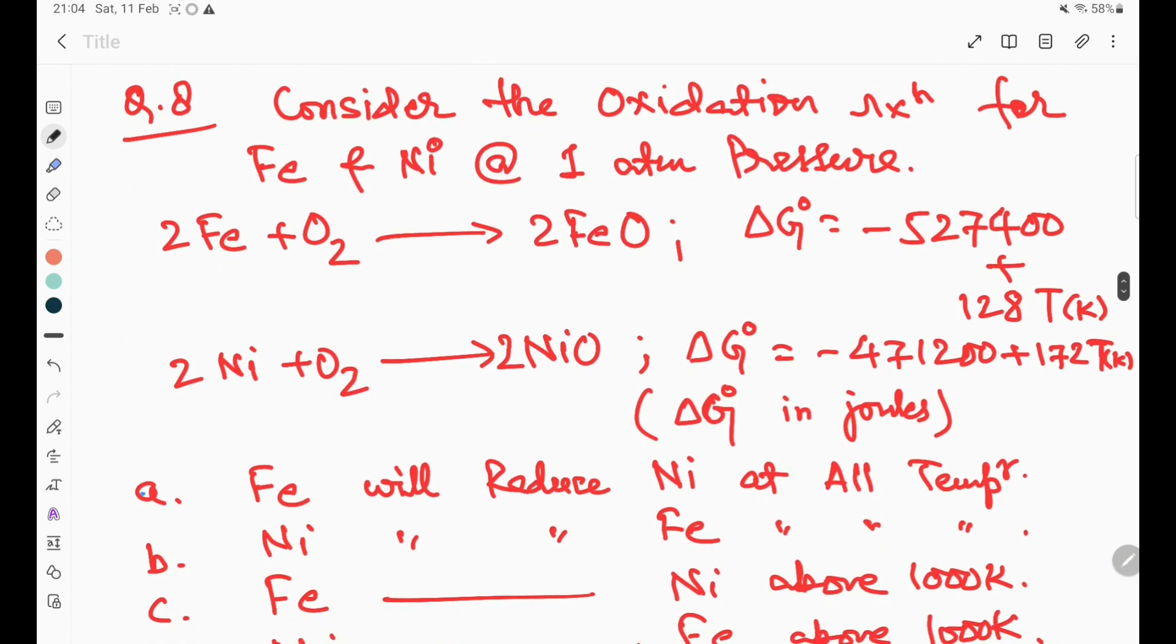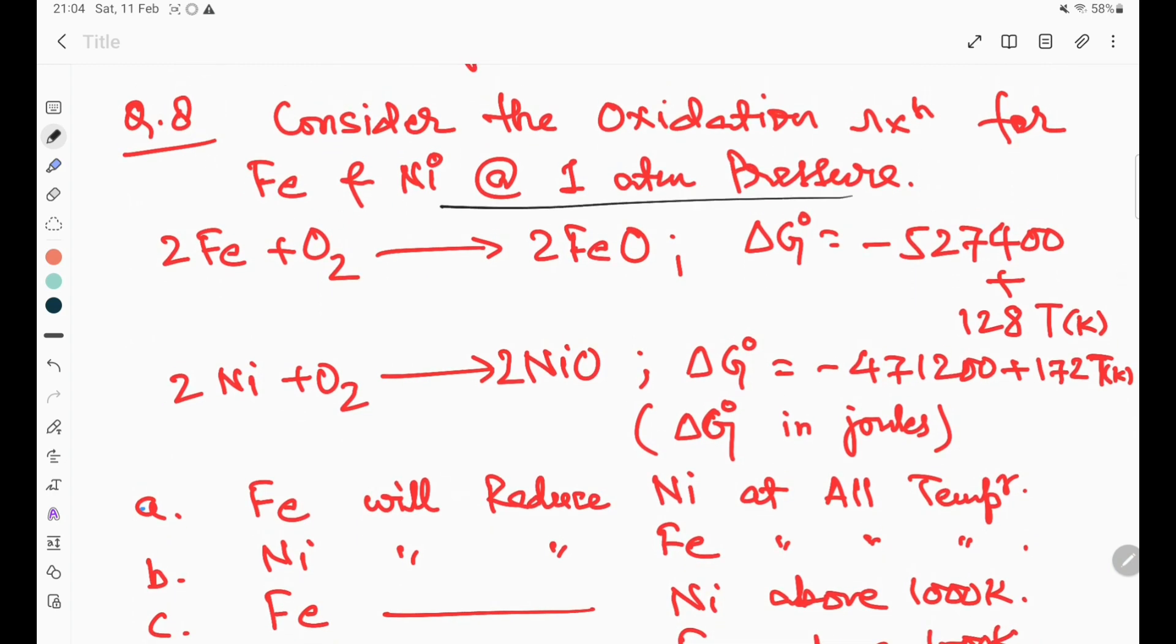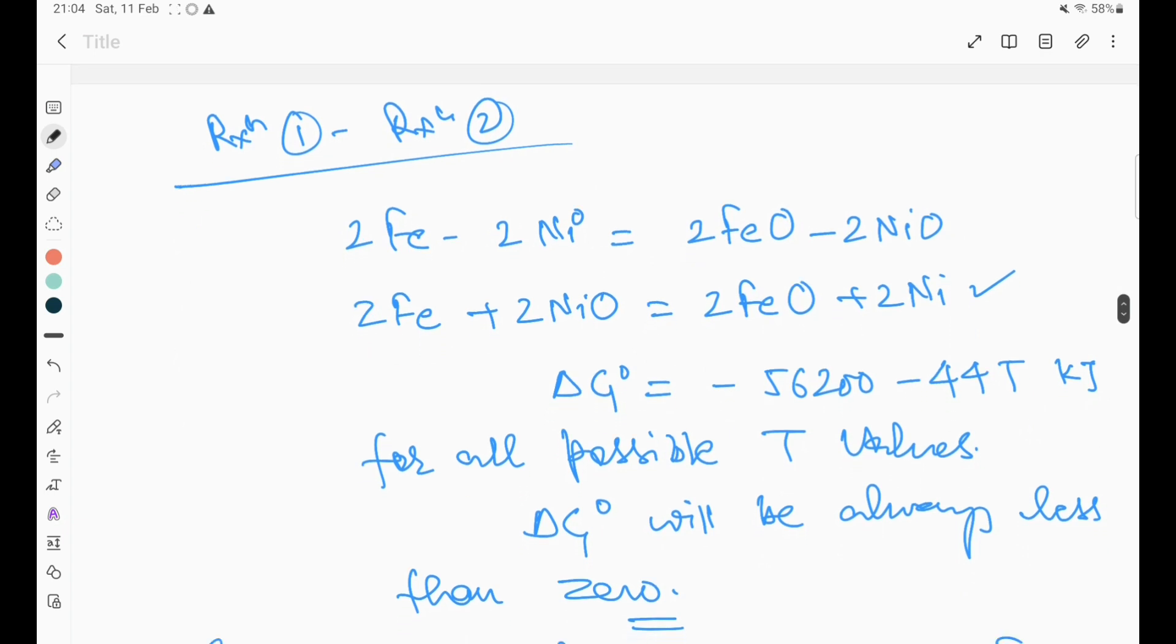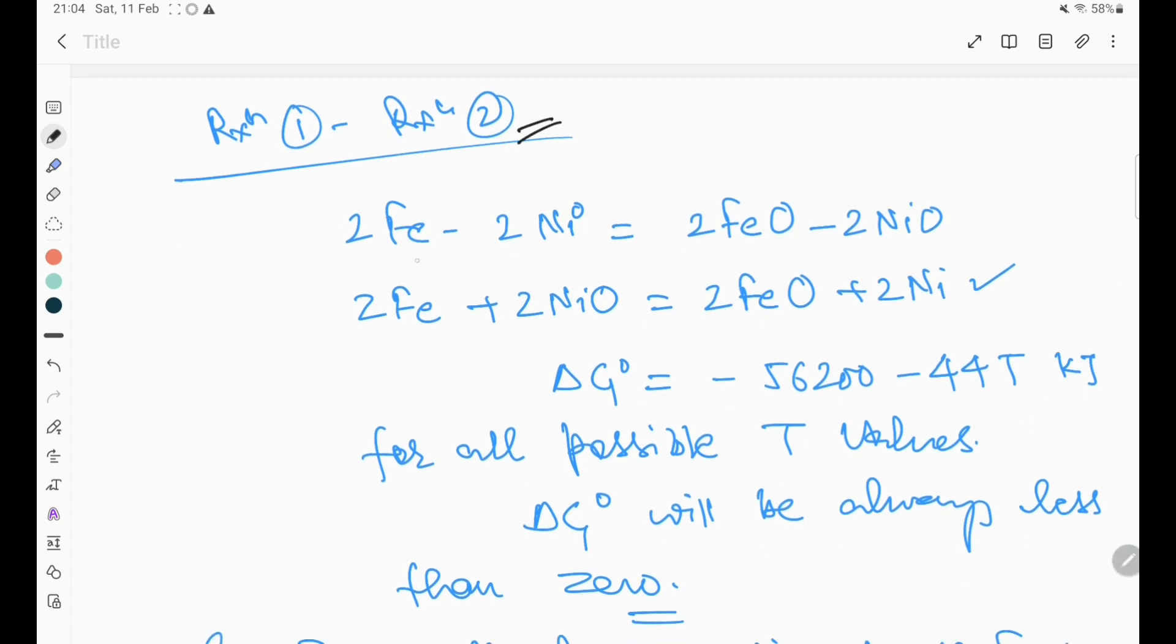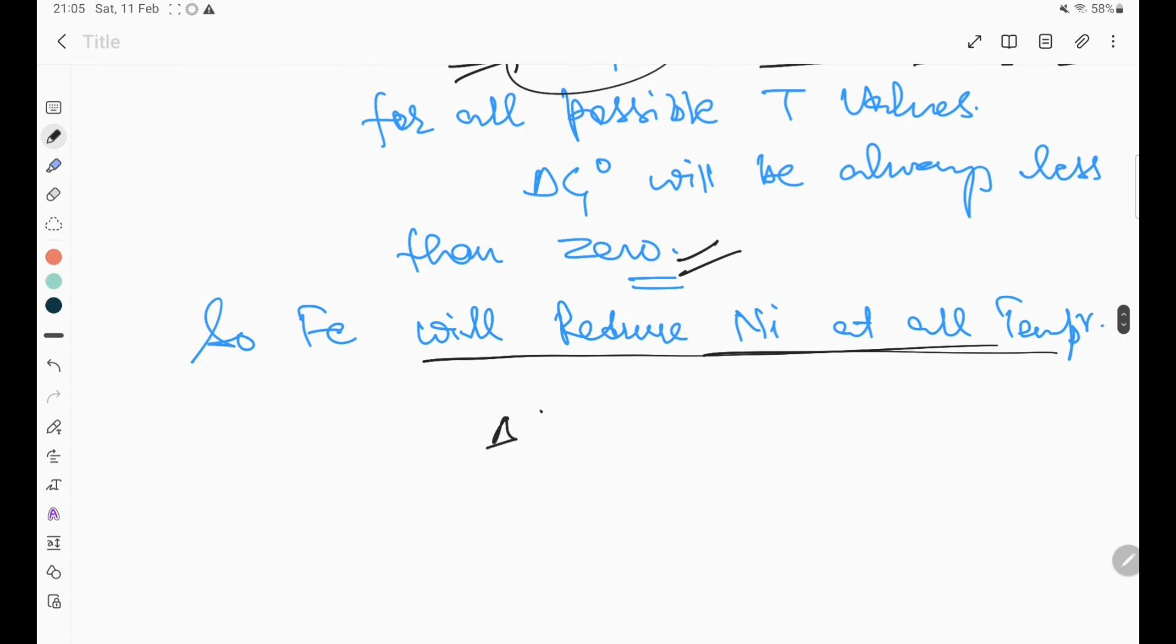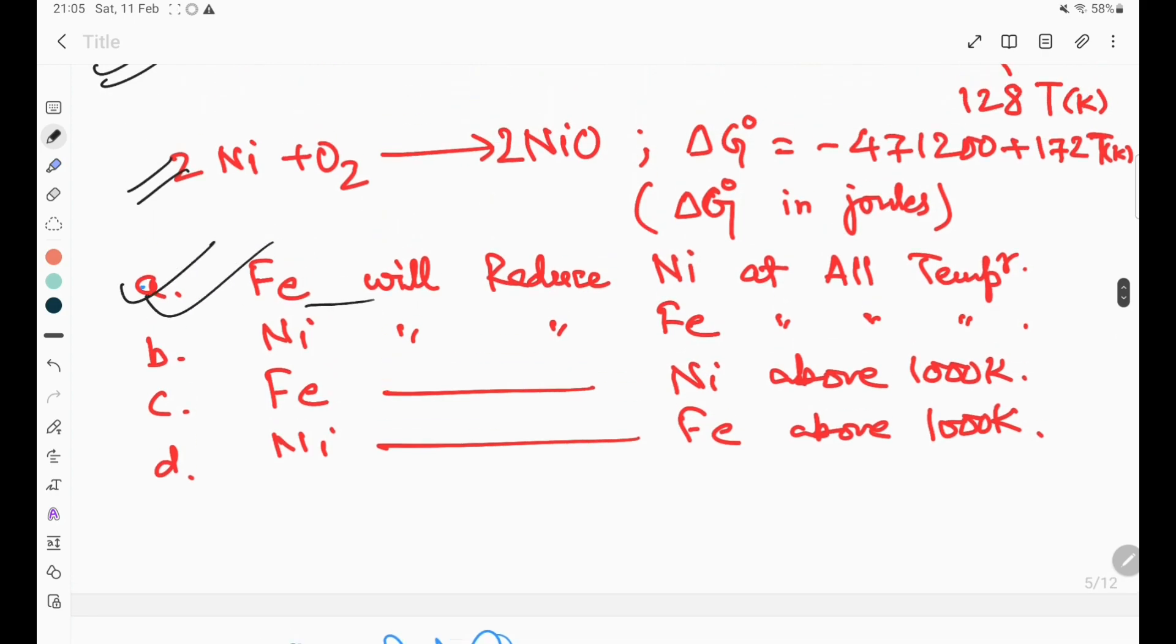Question number eight considers the oxidation reaction for Fe and Ni at 1 atm pressure. These are the two reactions. By solving these two reactions, we will see which element will reduce another element at all temperatures or some fixed temperature. Reaction 1 minus reaction 2: 2Fe minus 2Ni equals 2FeO minus 2NiO. By solving this, we get delta G naught equals minus 56,200 minus 44T. For all possible T values, delta G naught will always be less than zero. So only this condition: Fe will reduce Ni at all temperatures. Option A is the right answer.